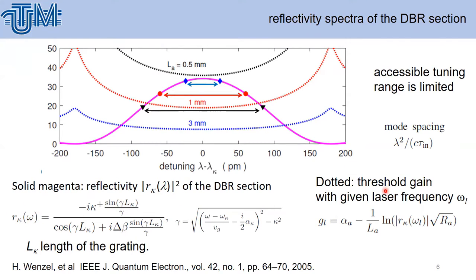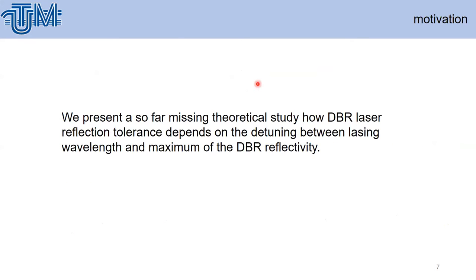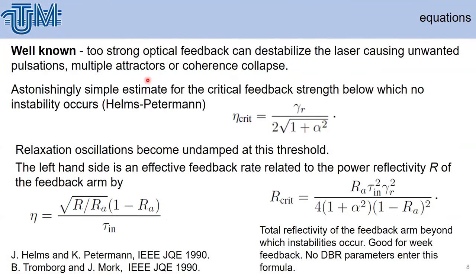The dotted threshold gives the gain for the laser frequency omega_L. We present a previously missing theoretical study of how the DBR laser reflection tolerance depends on the detuning between laser wavelength and maximum DBR reflectivity. We found that this analysis had not been presented in the literature. It is well known that too-strong optical feedback can destabilize the laser, causing unwanted pulsation, multiple attractors, coherent collapse, or even chaos.